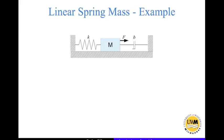Let us look at our first problem. This is a very simple problem — a single linear mass attached by a spring to one wall and by a damper to another wall, with a force F acting on the mass. The objective is to find the equations of motion for this mass under this driving external force.